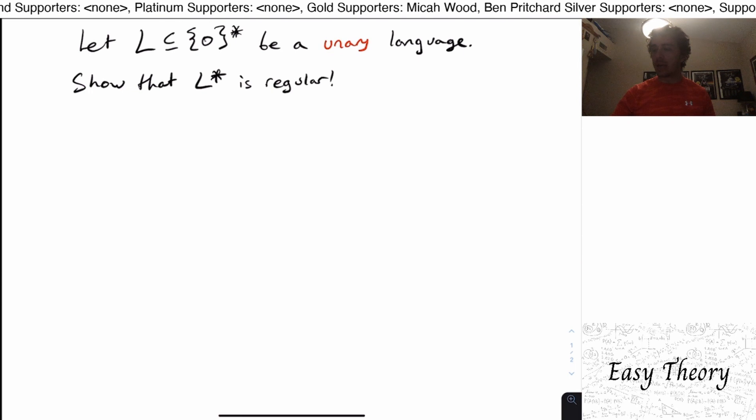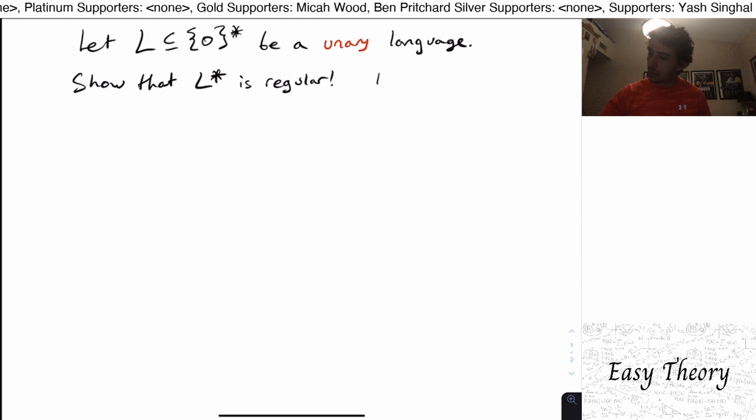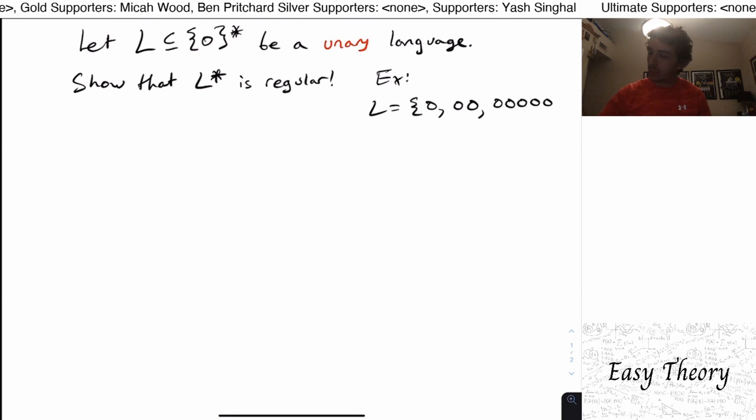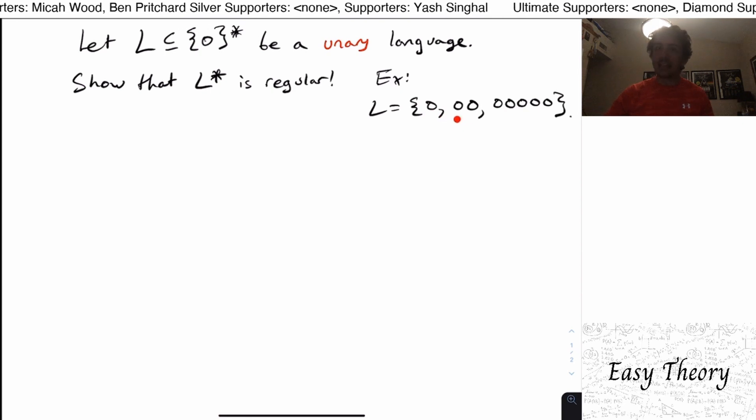By unary this means that there's only one character in the alphabet. As an example we could have L to be zero and then zero zero and then maybe five zeros or something.